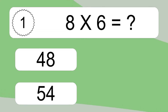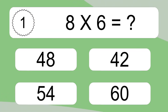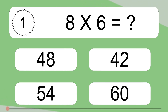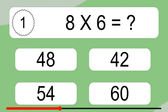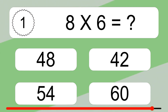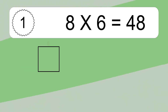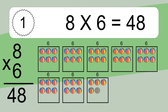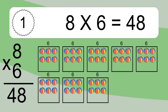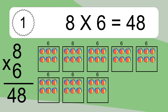8 times 6 equals what? 8 times 6 equals 48. We have 8 boxes, and each box has 6 colorful balls inside. If you count all the balls in all the boxes together, you will have 8 times 6 balls. This equals 48 balls.